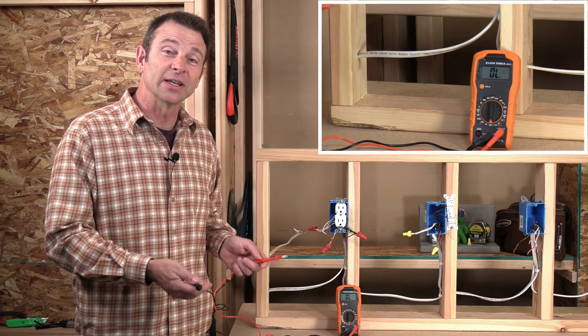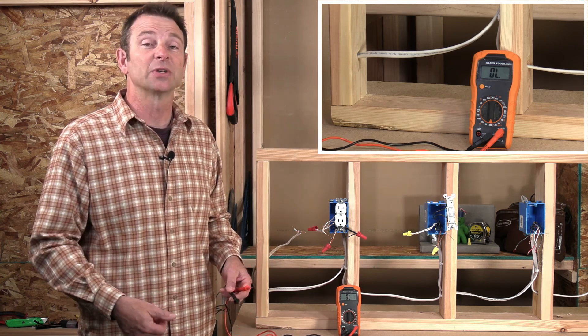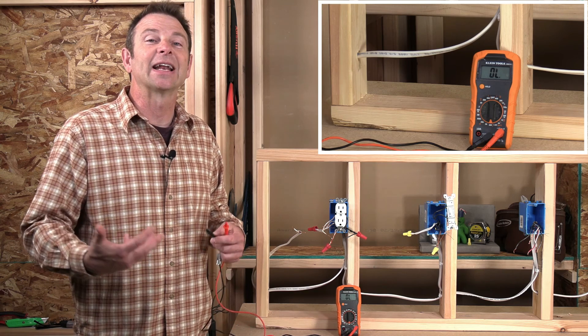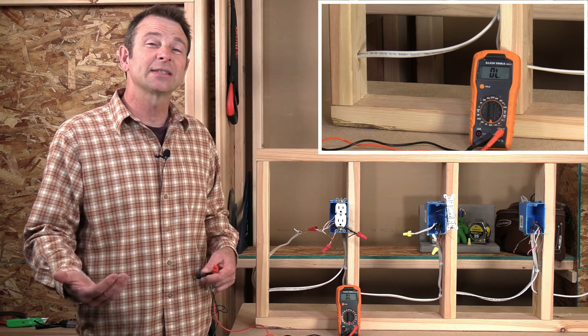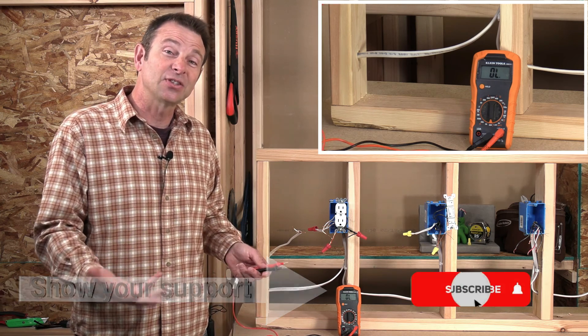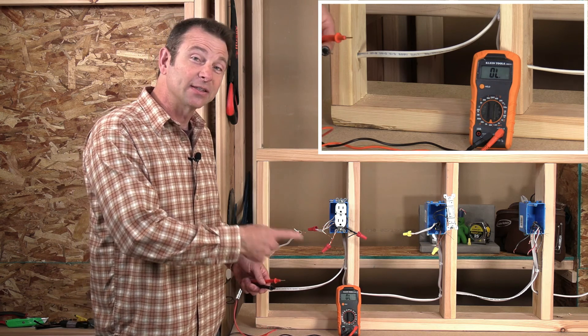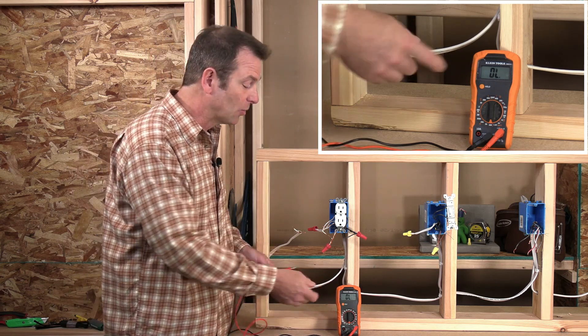So this particular model of circuit tester is going to read OL when there is no continuity or no connection in the circuit that you're testing. And OL stands for over limit, which means it cannot read that high of resistance. Resistance is basically a choke in the circuit and an infinite choke would be a break in the circuit. So if you do not have continuity through a circuit, you'll get an OL.